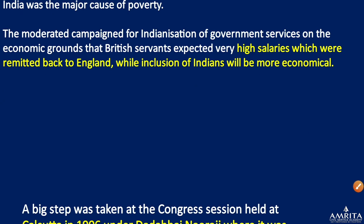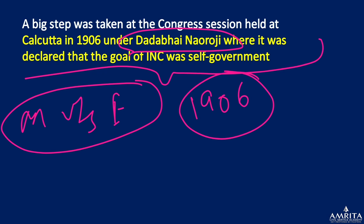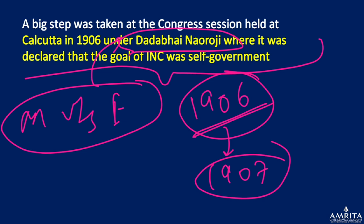His 1906 INC session was very significant. The moderates versus extremists debate was intensifying, and Naoroji was selected for the presidency because both parties respected him. Eventually, the 1907 Surat Split happened. Interestingly, in 1906 nobody could agree on who should chair the session, so both sides mutually decided to give the presidentship to Dadabhai Naoroji since both respected him.